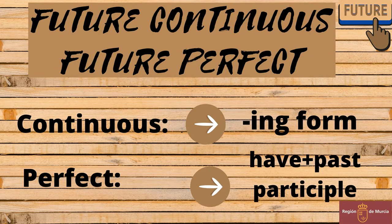Regarding form, every time we see a tense in English including the word 'continuous' in the name, we know for certain that there is an -ing form. In the same way, when we see 'perfect', we also know the form will include 'have' plus a past participle.